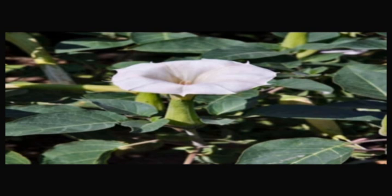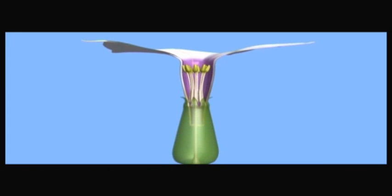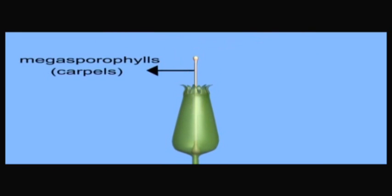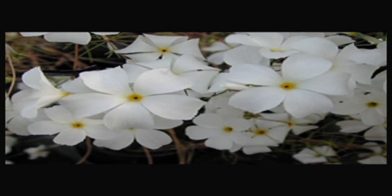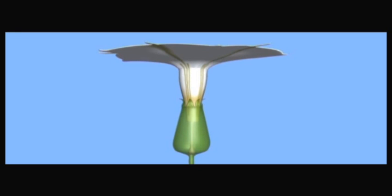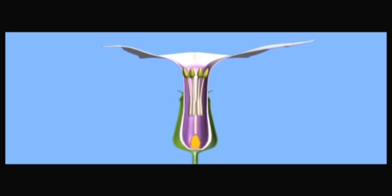The flower is a specialized shoot of limited growth bearing reproductive organs — microsporophylls, that is stamens, and megasporophylls, that is carpels. Let us study the flowers in detail and do one activity: take this datura flower and cut it into half, and now observe the parts clearly.